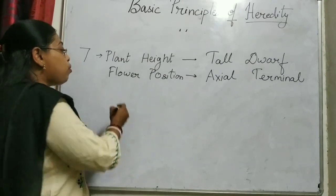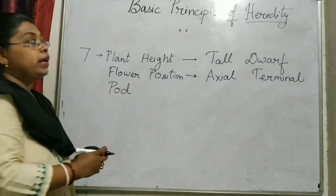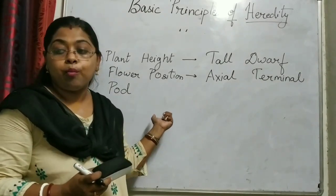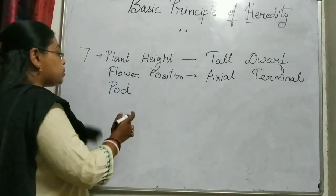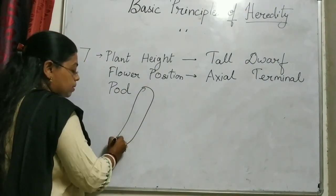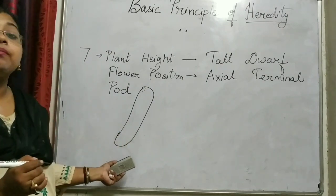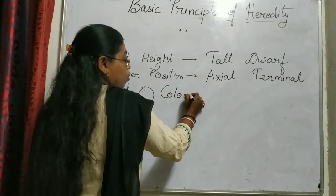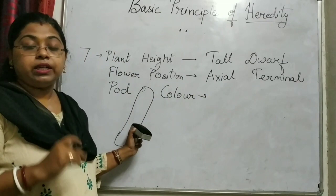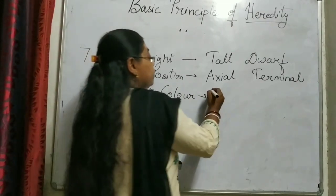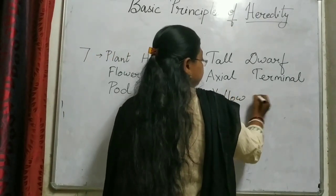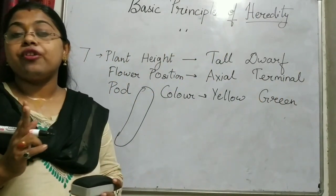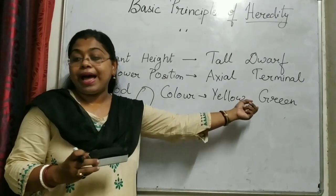Next is the pod. In the pea plant, we have a fruit that is known as a pod. This pod is the fruit that the pea plant has. The first pod character is pod color. What is the color of this pod? It is of 2 varieties: yellow and green — two contrasting characters.